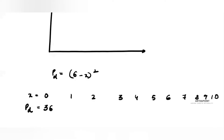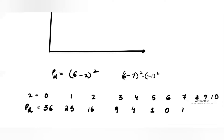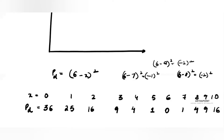When X=0, P = 6² = 36. X=1: 5² = 25. X=2: 4² = 16. X=3: 3² = 9. X=4: 2² = 4. X=5: 1² = 1. X=6: 0² = 0. X=7: (−1)² = 1. X=8: (−2)² = 4. X=9: (−3)² = 9. X=10: (−4)² = 16. You can clearly see this is coming out like a parabola.